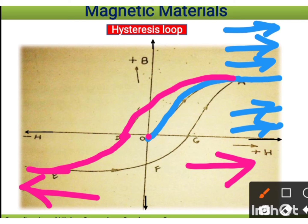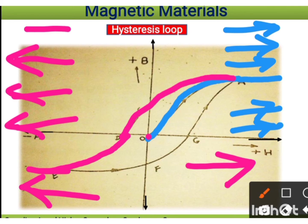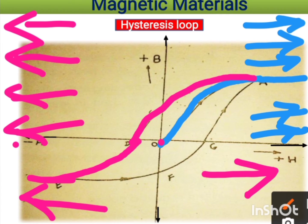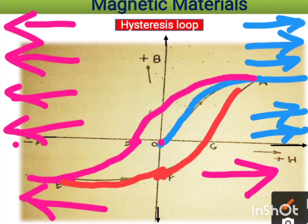Increasing the field further in the same direction drives the substance to magnetization and saturation again, reaching point E. If we then reduce the inducing field back to zero, the magnetization does not return to zero but follows a path showing a retentive magnetic field — the material retains magnetism. Increasing the field again brings it back to saturation, completing the loop.